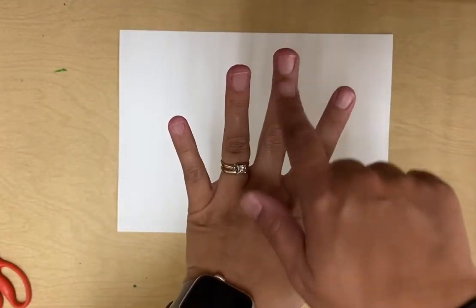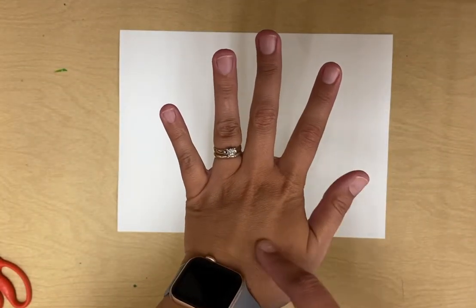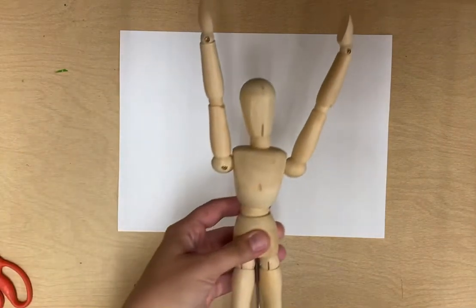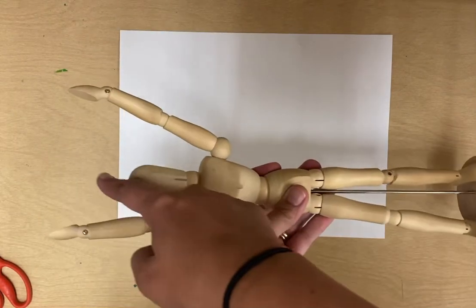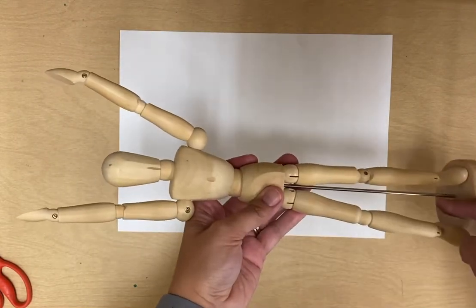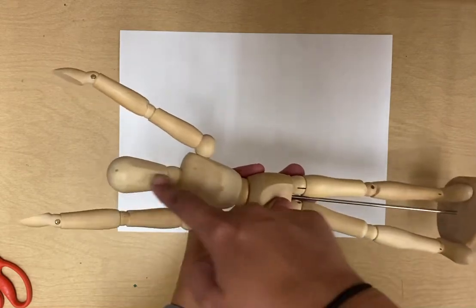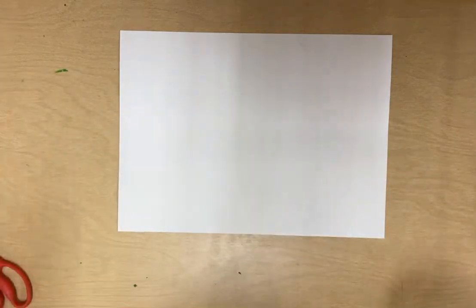My hand is not symmetrical because it's not the same on both sides. However, if I took this little mannequin guy and drew a line down his middle, he has an arm on each side, a leg on each side. His body is symmetrical, so when something is symmetrical it's the same on both sides.